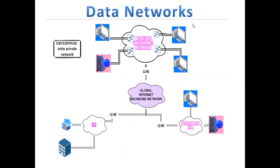A wide private area network has many LANs — it is also called a multiple site business, where all the LANs are connected with the help of an inter-site backbone network. Each LAN has many computers connected, along with a server. This is also called an enterprise-wide private network where multiple site businesses can be operated.